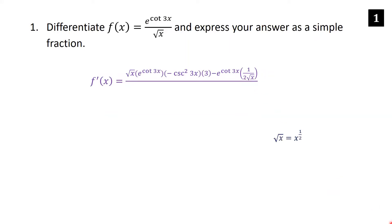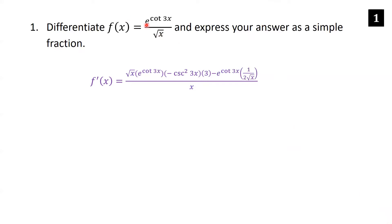If you weren't able to see that quickly, you might want to rewrite root x as x to the half and then apply the power rule. The derivative of x to the half is one half x to the minus a half. The negative exponent means we bring it into the denominator, and the fraction — the 2 — becomes a root. That's where this 1 over 2 root x comes from. In the denominator, we take the denominator squared of the original as part of the quotient rule.